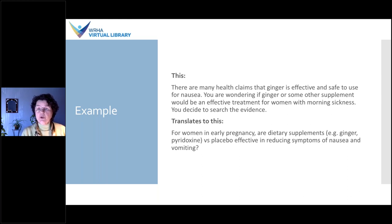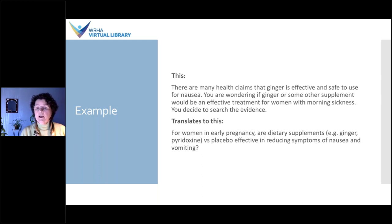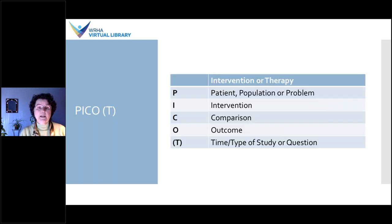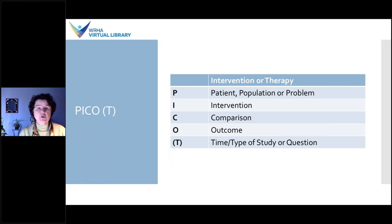There are tools out there for helping you work out the types of questions you have. PICO is used for intervention or therapy type questions. There are other tools such as SPIDER for qualitative searches, SPICE for project work or intervention evaluations, and ECLIPSE for evaluating policy or services. Not all your questions may fit the PICO format — it's specifically for intervention or therapy, but if you use that format it will help you formulate a good search question.